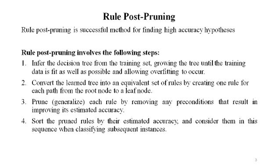C4.5 is considered an outgrowth of the original ID3 algorithm. Rule post pruning involves four steps. The first step is to infer the decision tree from the training set — growing the tree until the training data is fit as well as possible and allowing overfitting to occur.